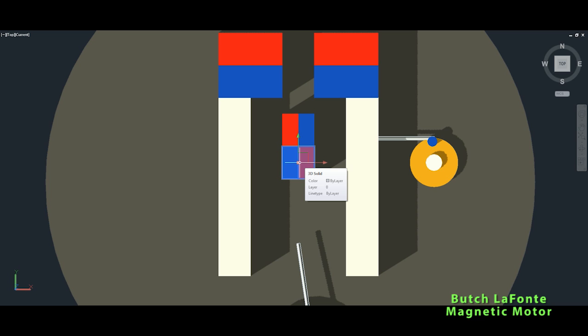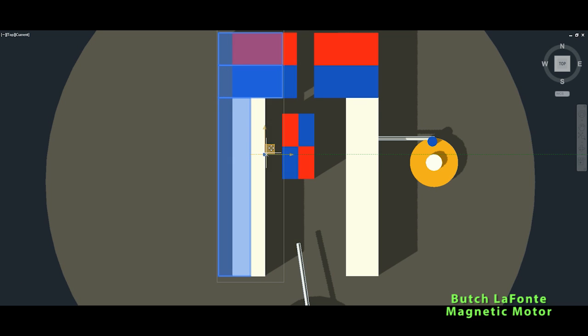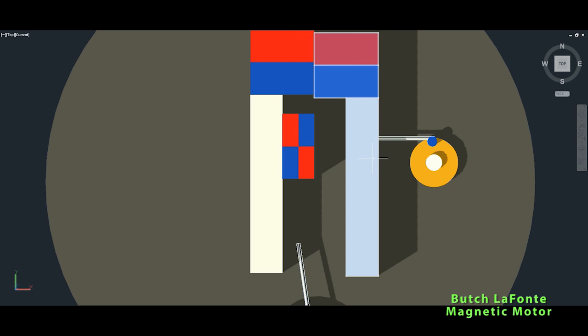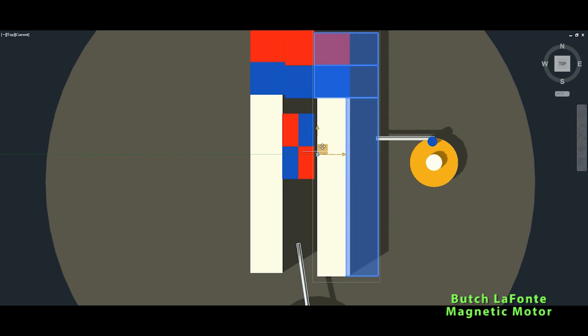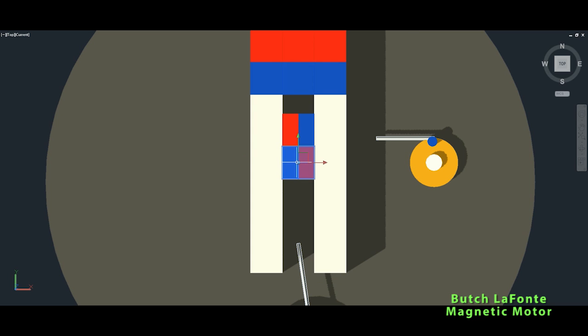But what Butch LaFonte concluded is that when these two magnets are now between the steel rods in this position, that's why it's needed that mechanism, now it's very easy to separate bottom magnet.